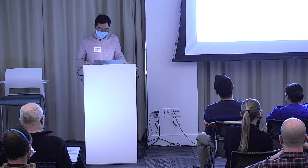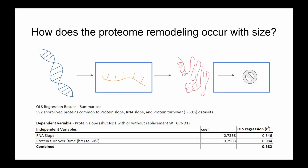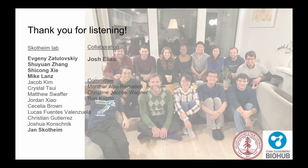We looked at both transcription and protein turnover, and we can now combine those two into a simple OLS regression model. All combined together, we can explain about 58% of the data using those two factors. Thank you for listening.